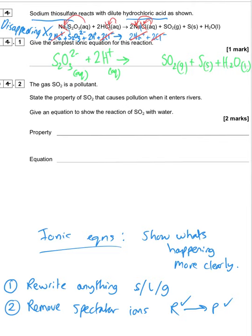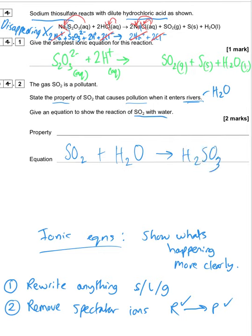Sulfur dioxide is a pollutant when it enters rivers. When SO₂ reacts with water it produces H₂SO₃. H₂SO₃ is acidic — non-metal oxides are acid oxides. The property causing pollution is that it is acidic, acting as a proton donor and producing hydrogen ions.